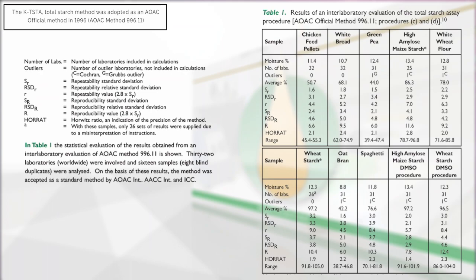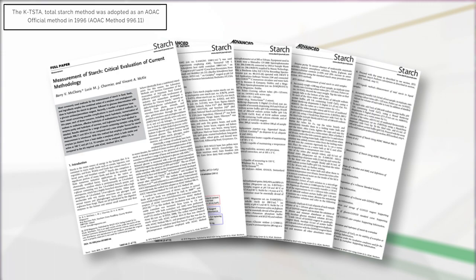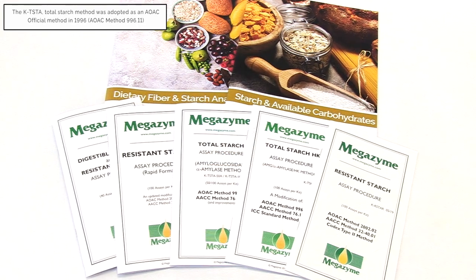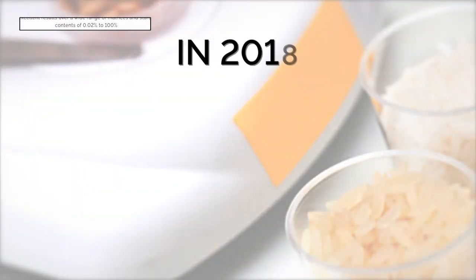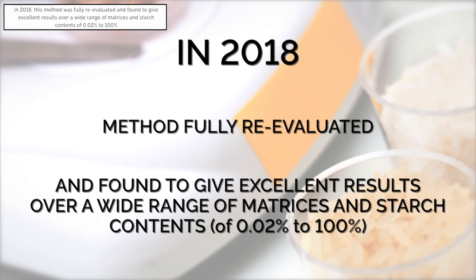Following extensive inter-laboratory evaluation, the total starch method developed by Megazyme was adopted as an AOAC official method in 1996, AOAC method 996.11. This method has found widespread international use since that time. In 2018, this method was fully re-evaluated and found to give excellent results over a wide range of matrices and starch contents.